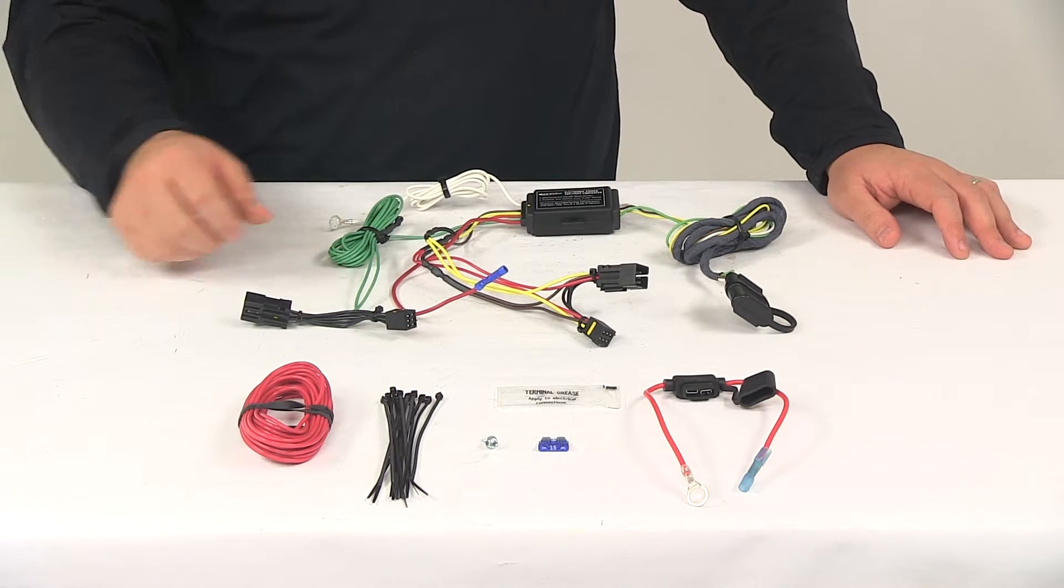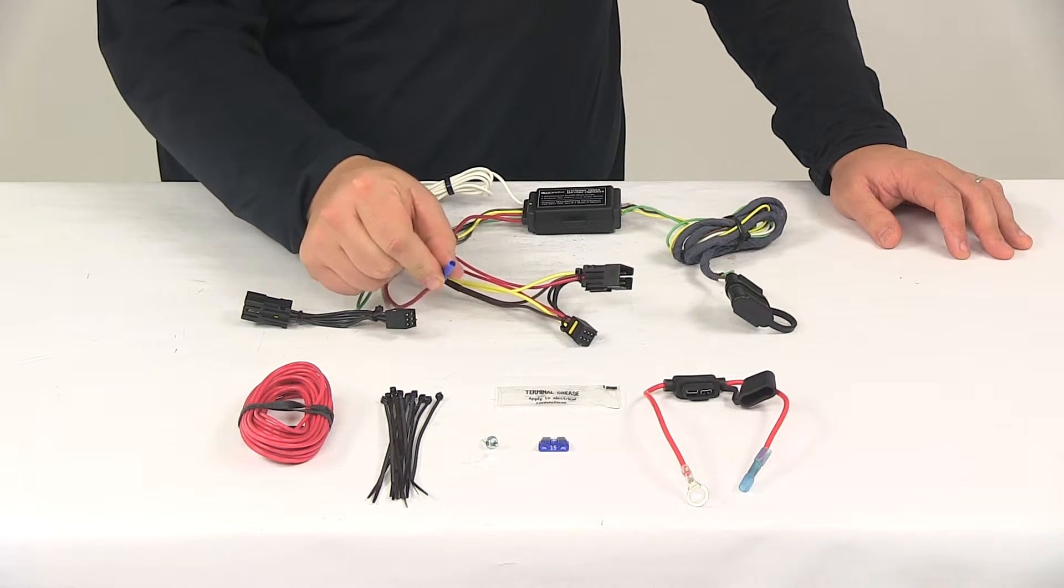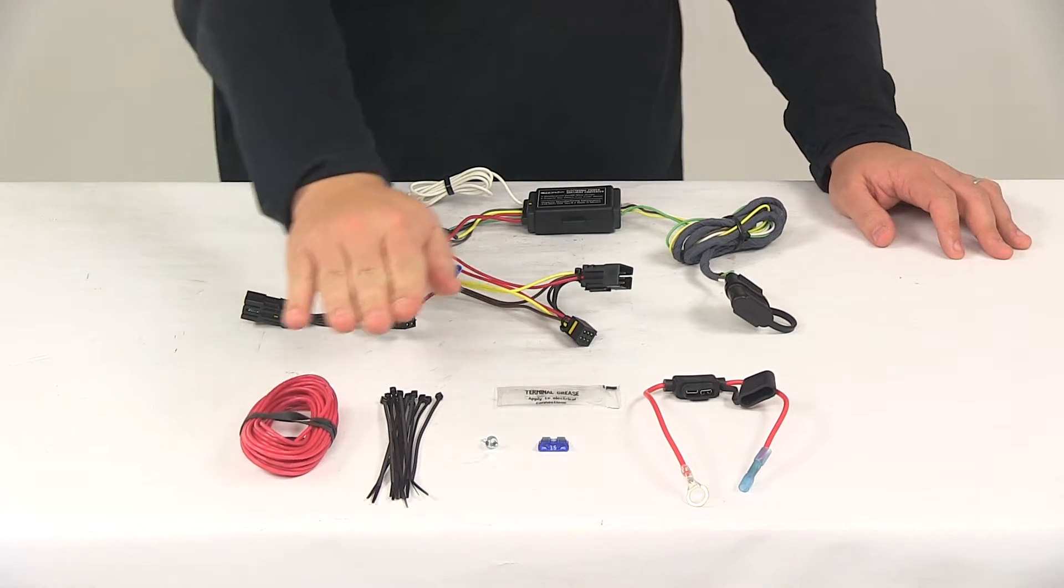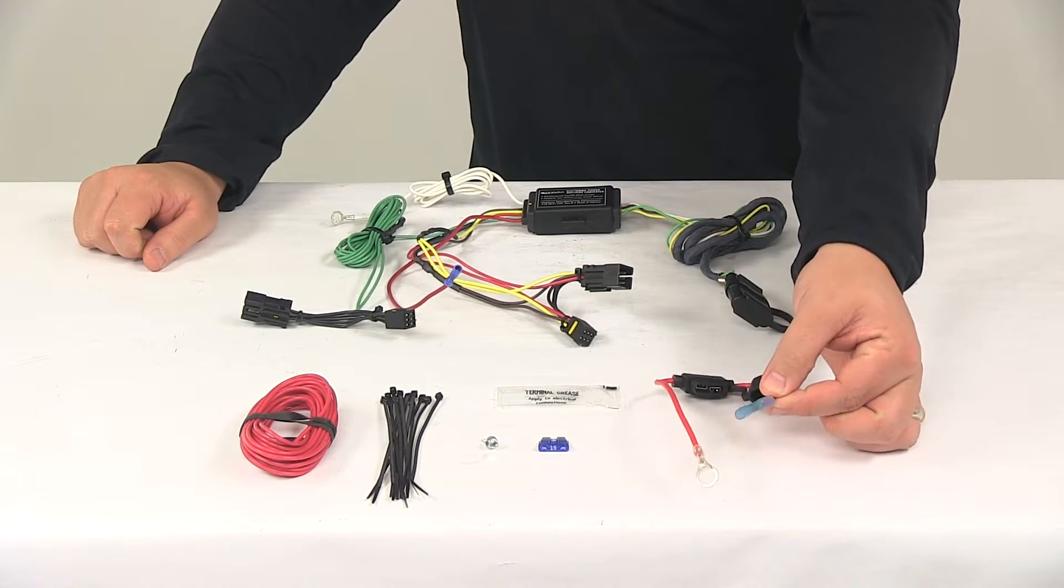Next you'll need to run the hot lead to the vehicle battery. That's the red wire coming out of the converter box. It's got a buck connector on there. This attaches to one end of the bundle of wiring. The other end of the bundle runs all the way up to the vehicle battery and gets connected to one half of the fuse holder here at the buck connector.